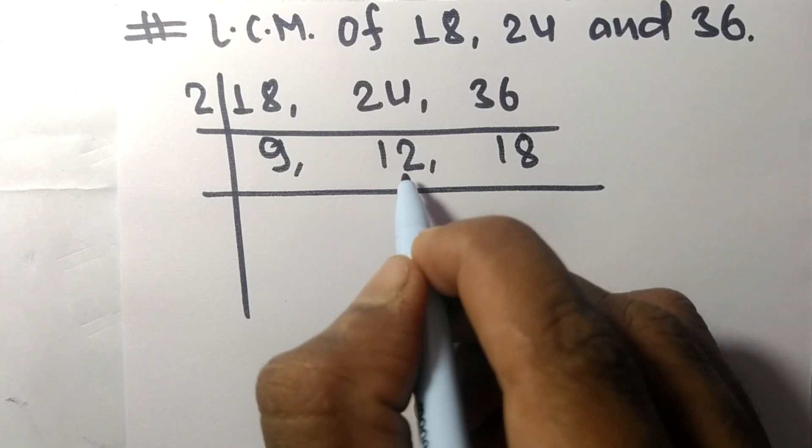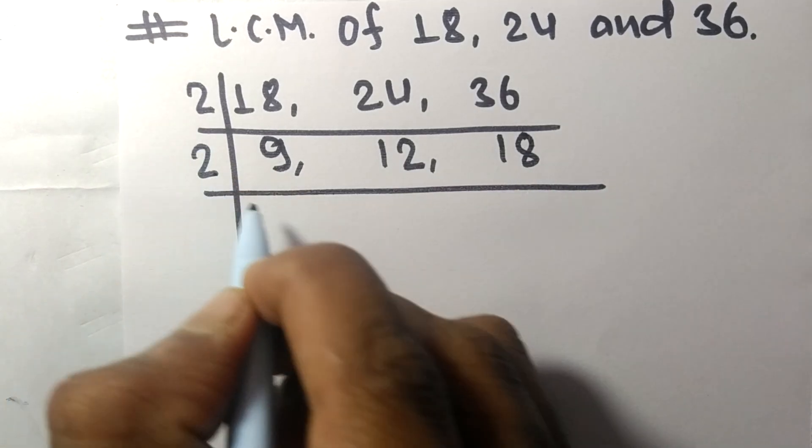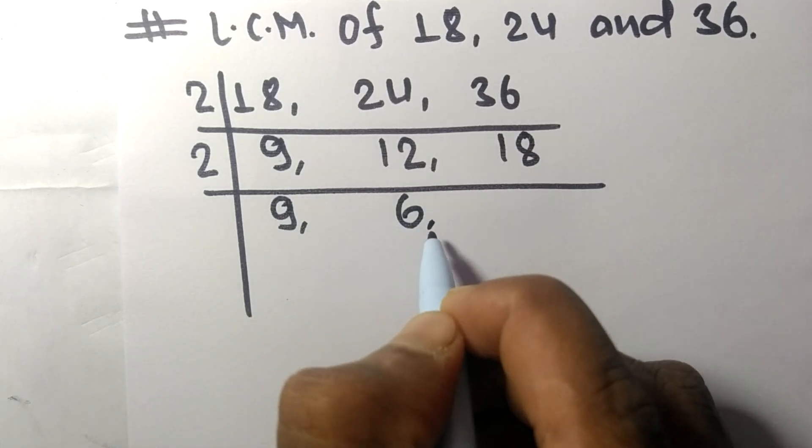Now 12 and 18 are divisible by 2. 9 is not divisible, so it stays the same. 2 times 6 means 12, 2 times 9 means 18.